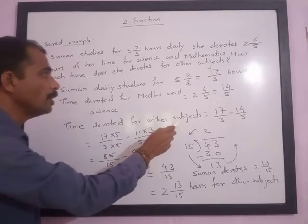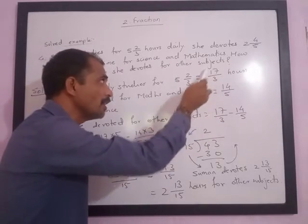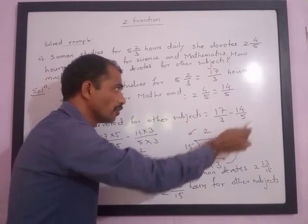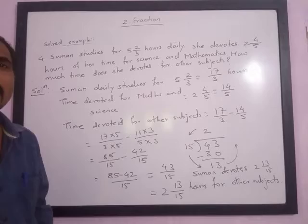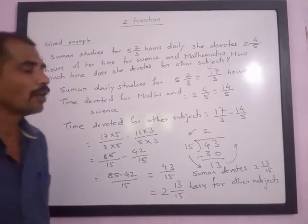Time devoted for other subjects will be total time, that is 17/3 minus 14/5. Now denominators are not same, so we cannot do the subtraction unless and until denominators are same. For this, we will have to make the denominator same.